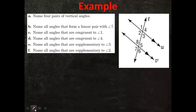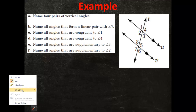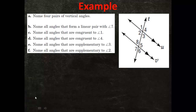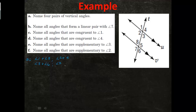In this example, part A says name four pairs of vertical angles. Looking at the top section, angle one and angle three are vertical, and angle two and angle four are vertical. Down in the bottom section, angle eight and angle six are vertical, and angle seven and angle five are vertical.